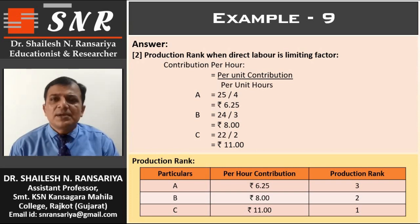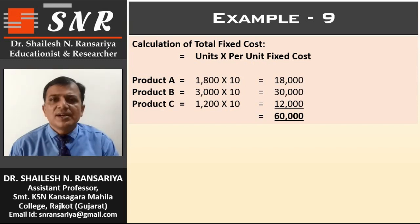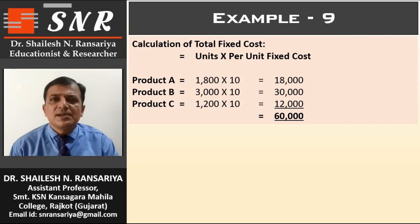Now we calculate the optimum production mix and profit. For that we require total fixed overhead. The fixed overhead is given per unit, so we calculate total fixed overhead by multiplying units and per unit cost. Product A: 1800 × 10 = Rs. 18,000. Product B: 3000 × 10 = Rs. 30,000. Product C: 1200 × 10 = Rs. 12,000. Total fixed overhead = Rs. 60,000.